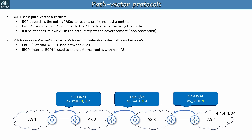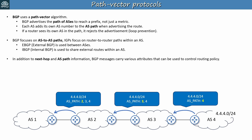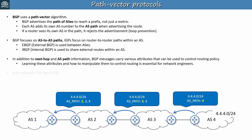Note that this example here oversimplifies BGP. In addition to NextHop and AS Path information, BGP messages carry various attributes that can be used to control routing policy. Learning these attributes and how to manipulate them to control routing is essential for network engineers. We'll cover BGP attributes to some extent in this course, but if you go on to do the NRC exam after, that's where you'll really have to learn them. Also, BGP actually runs over TCP using port 179. There are no broadcast or multicast messages between peers — which is the BGP term for a neighbor. Instead, peers are manually configured and they establish a TCP connection to exchange BGP messages.